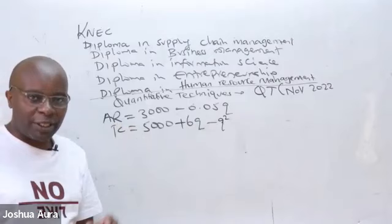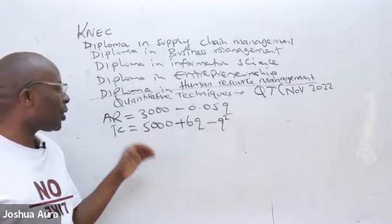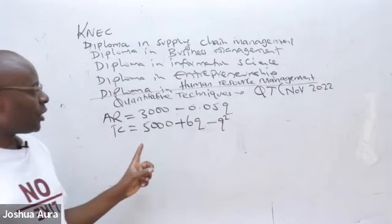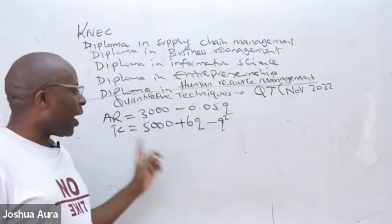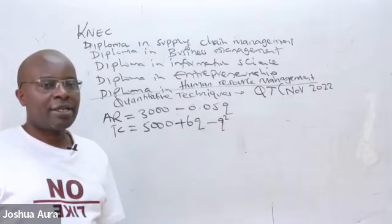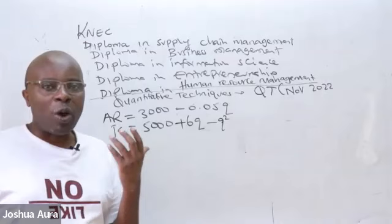In this quantitative techniques question, they are given the average revenue which is $3,000 minus 0.05Q, then we have total cost $5,000 plus 6Q minus Q squared. And then they wanted us to do something very easy. Number one, to ascertain the total revenue function.